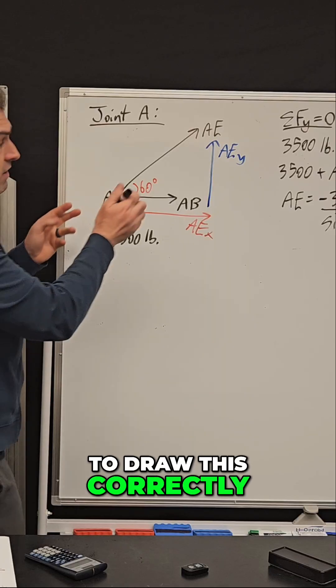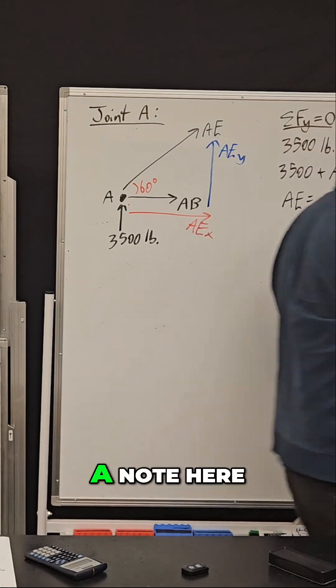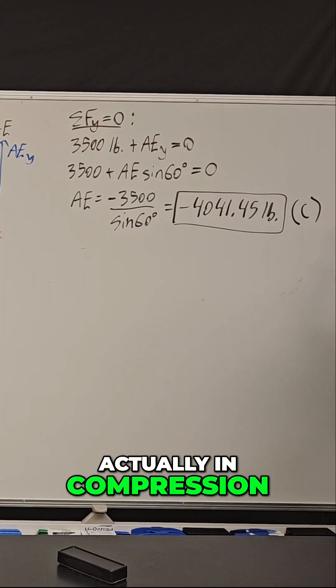So to draw this correctly, I would've had this arrow pointing in towards the joint. So that tells me, and I'm gonna make a note here, that this member is actually in compression.